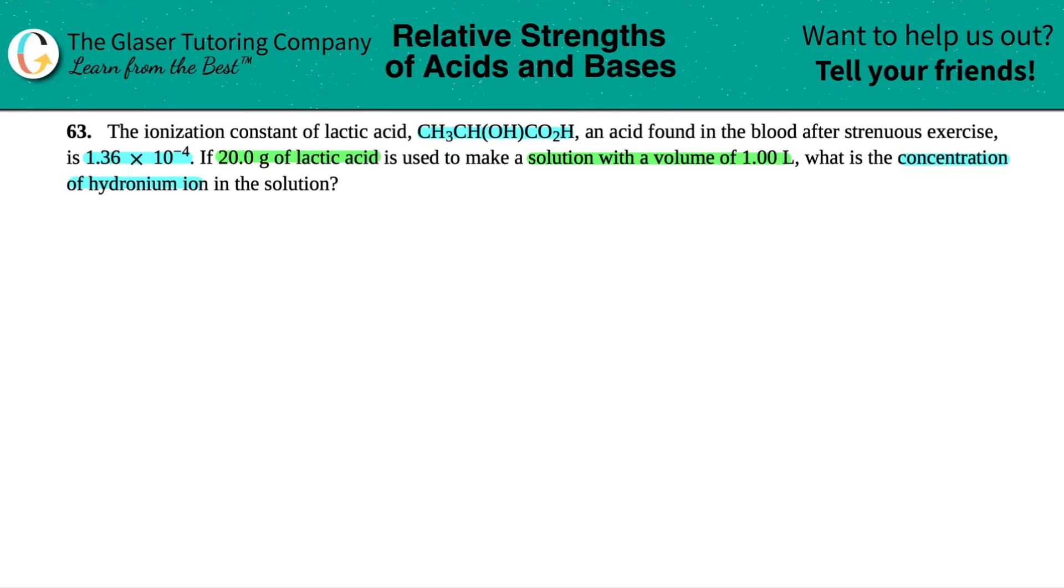Alright, so let's just write down a couple of things that they told us. They told us that the ionization constant of lactic acid, there's literally the word acid in the compound here. So I know that the K value that we're talking about is a Ka. A stands for acid. So we know that we have a Ka value of 1.36 times 10 to the negative fourth.